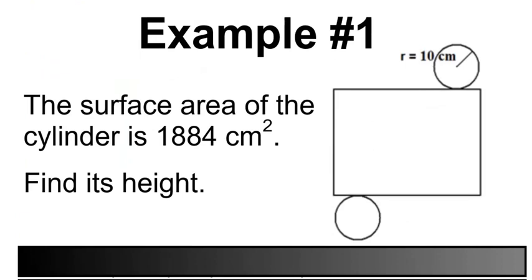For example 1, we're given a radius of 10 centimeters on the circle, and the surface area of the cylinder will be 1,884 centimeters squared. So let's find its height.